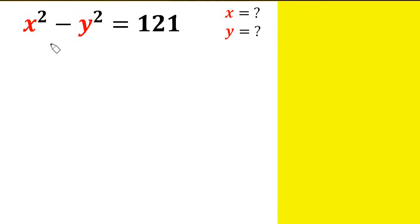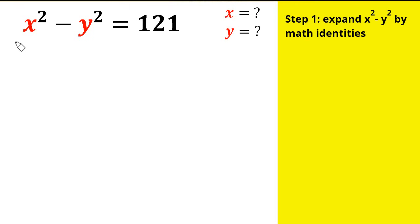Today we are solving the question x squared minus y squared equals 121, and we need to find the values of x and y. The first thing we're going to do is Step 1: expand the left hand side, x squared minus y squared, using a math identity.